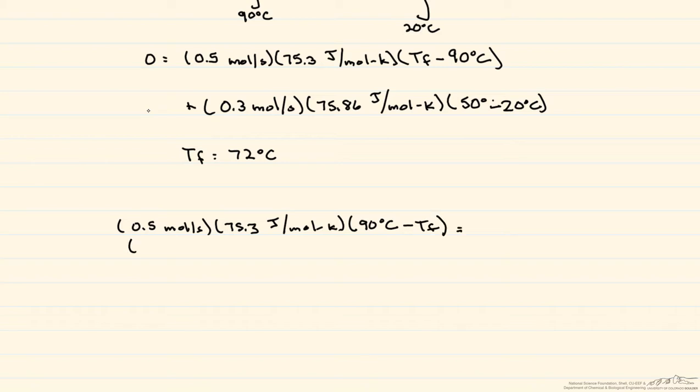And that's going to be equal to 0.3, again this is the methanol, moles per second, times 75.86 joules per mole Kelvin, and now this is 50 degrees minus 20 degrees C. And actually you can calculate this, which is equal to 683 joules per second, or watts.